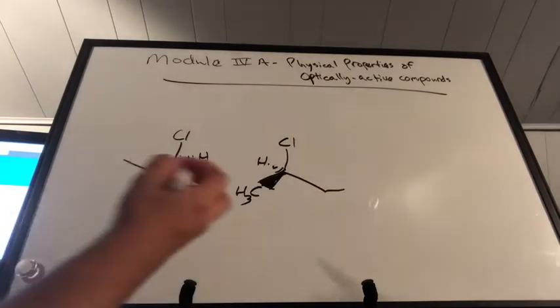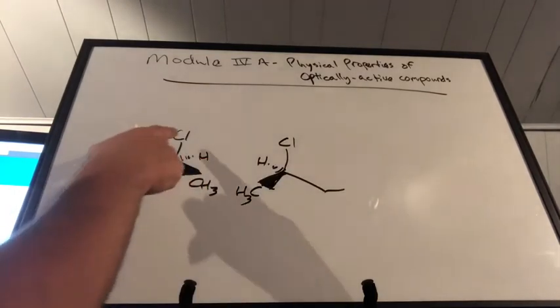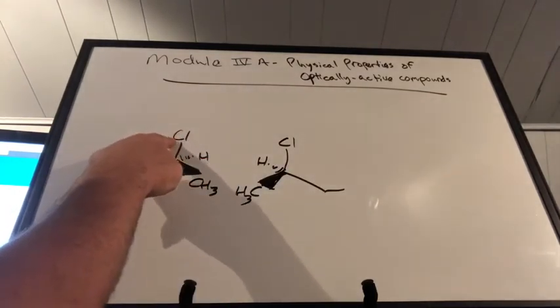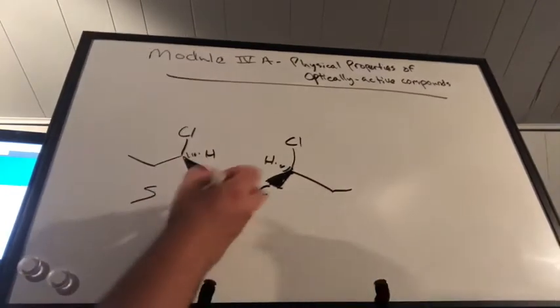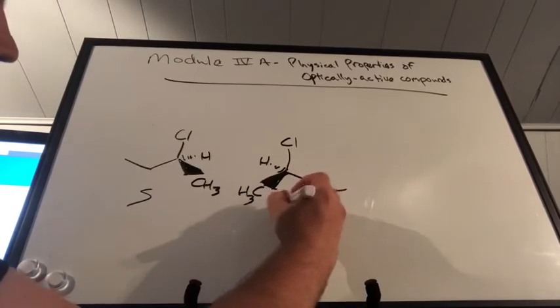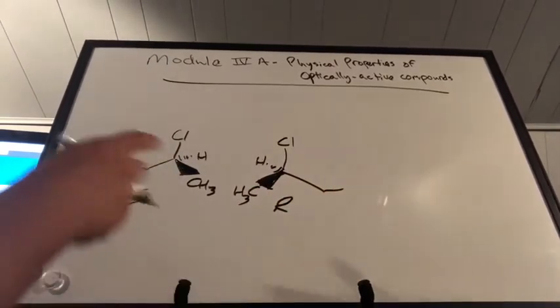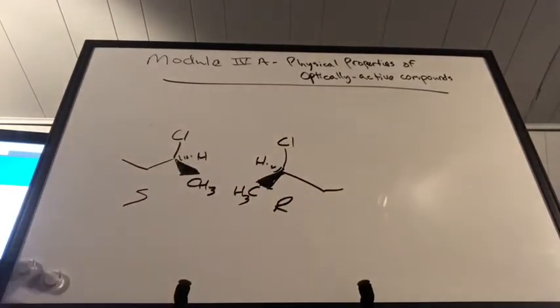If we're going to go for highest to lowest priority, it's going to go one, two, three. So that's going to be S and this is going to be R. Now these are going to bend light in their own particular way.